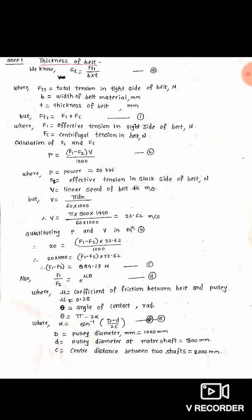ft1 = f1 + fc. To find f1 we use the power relation: Power = (f1 − f2) × v ÷ 1000 — this is equation B. Power available is 20 kW. In this relation f2 is the effective tension in the slack side of belt in Newton, and v is the linear speed of belt in meters per second.